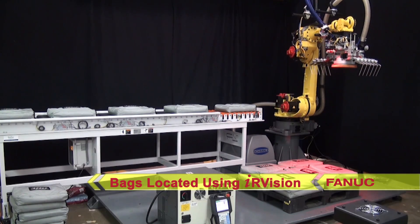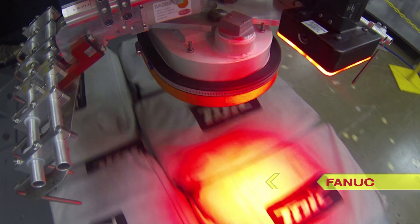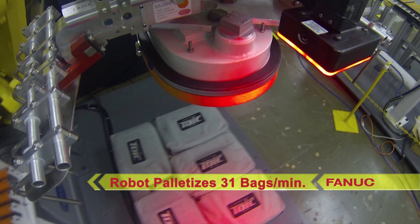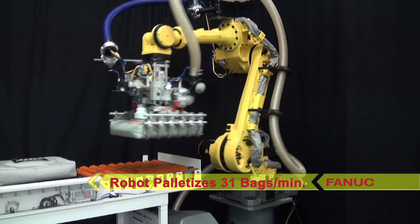The R1000IA 80H robot in this system palletizes 31 bags per minute, which is the fastest for an industrial robot.